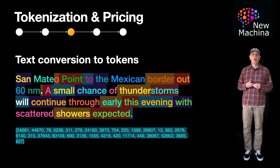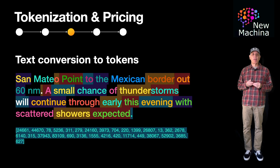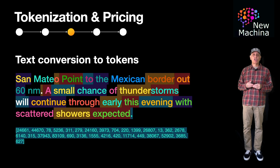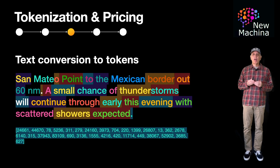For cloud-based LLMs with a pay-for-use pricing model, tokens have added importance. Examples of cloud-based LLMs are OpenAI's ChatGPT as well as all the LLMs available in AWS Bedrock. For these cloud-based LLMs, pricing is based on the input tokens consumed as well as the LLM's output tokens produced. Note that different LLMs have different tokenizers and different pricing models, so as a builder this will be one of the things you consider if you select a cloud-based LLM for your system.